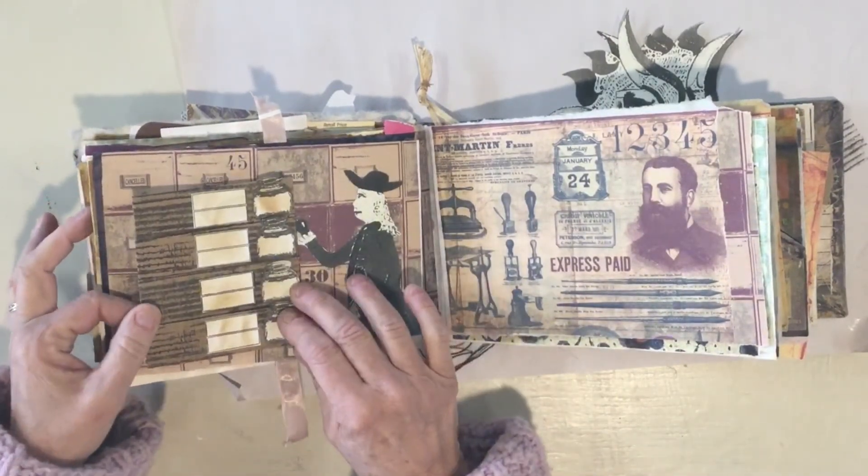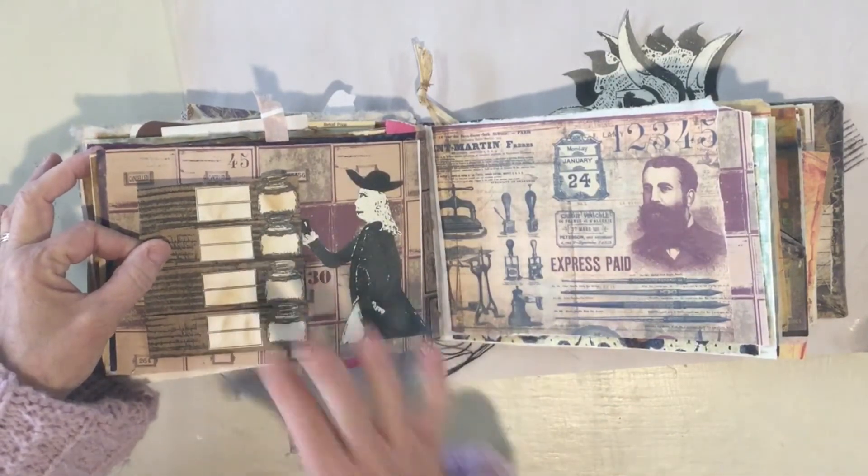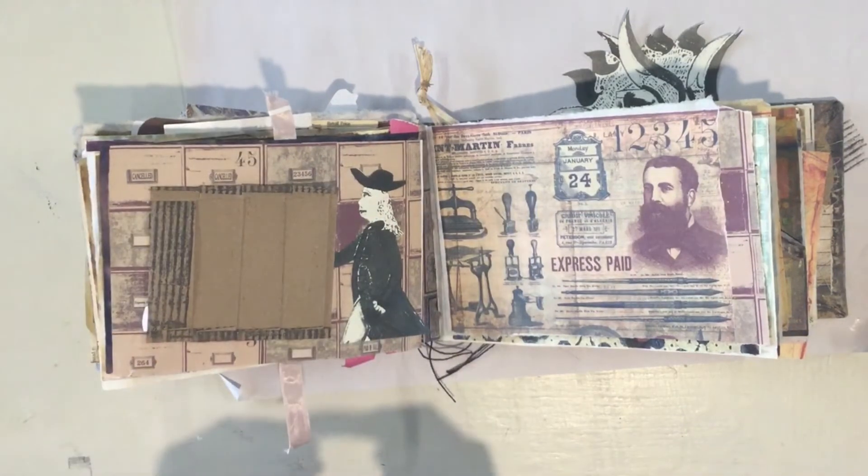So I think I'm just going to add this fun pocket to this book page and then we can add fun tags or tickets or notes or just paper to write journaling on in them. I'm going to use my tape and I'm just going to tape this down here.